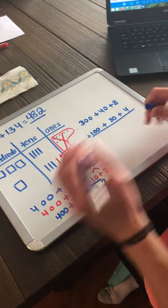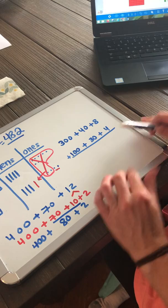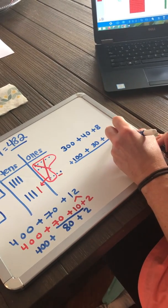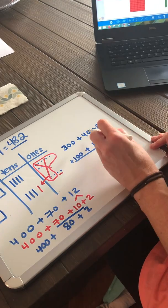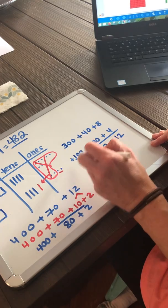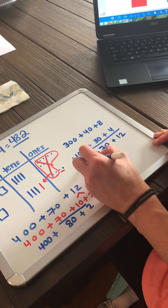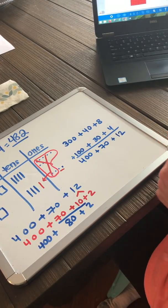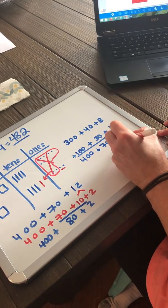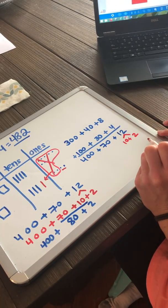Let's look at this with expanded form. If you would like to solve it with expanded form. 8 1s plus 4 1s is 12 1s. 40 plus 30 is 70. And 300 plus 100 is 400. I see that I need to decompose 12 into a 10 and 2 1s.